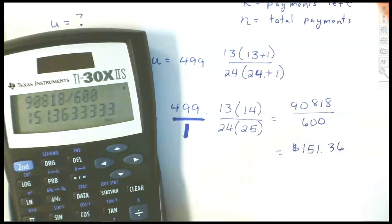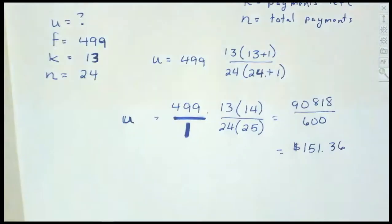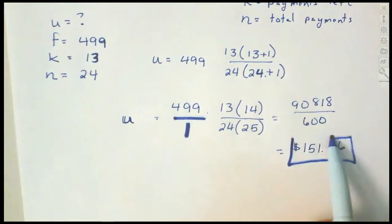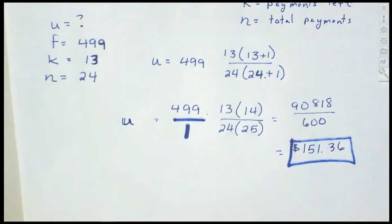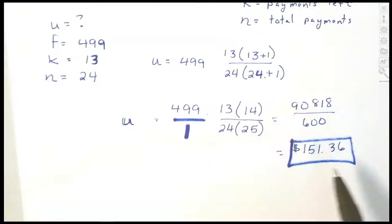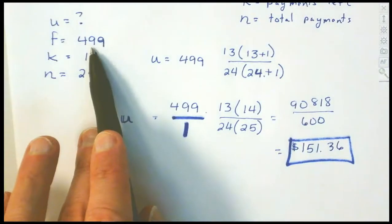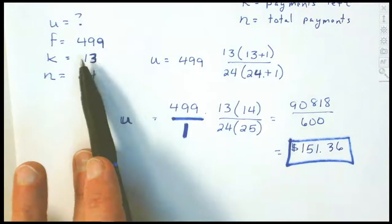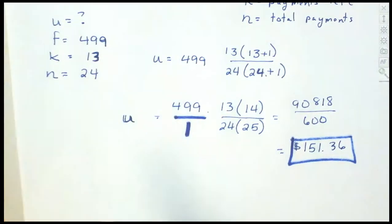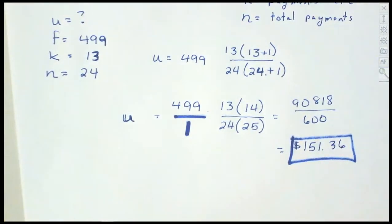That is how much money we would save if we paid it off with 13 months left. The more payments that are left, the earlier you pay it off, the more money you'll save. If there were 22 payments left, you'd save a lot more — close to $499. If K were only 3 or 4 payments, you might only save $50. With 13 payments left, we saved $151.36.